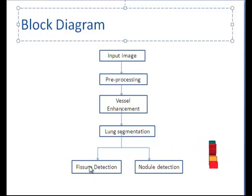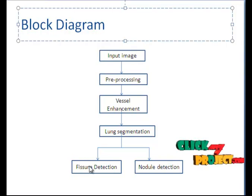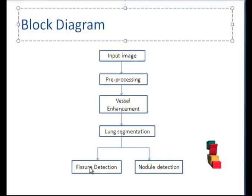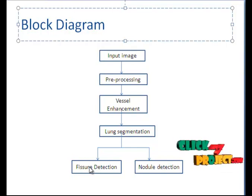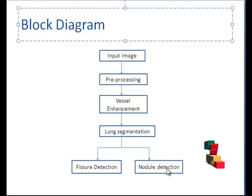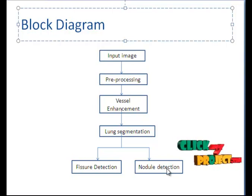In fissure detection, fissure regions are identified using the fissure sweeping technique and enhanced using the region growing method. The fissure sweeping technique finds fissure regions in the pre-processed CT image. For nodule detection, nodules are detected using adaptive thresholding. The mean of the CT image is used as the threshold value. Initially, histogram equalization is used to enhance the contrast of the nodules.